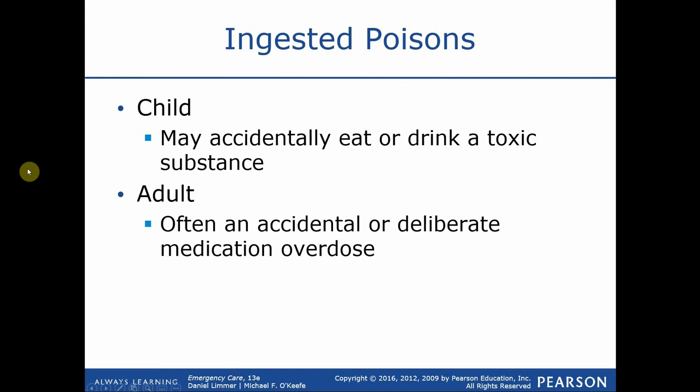Children are typically curious — they want to taste and explore things, especially with their hands and mouths. So a lot of times poisons are introduced into the body through the digestive system out of curiosity. If an adult ingests some amount of poison, it's difficult to argue the ingestion was simply accidental. We have to consider whether this is possibly an intentional overdose or a suicide attempt, and beyond treating the poisoning, there may be behavioral or psychological treatment required.